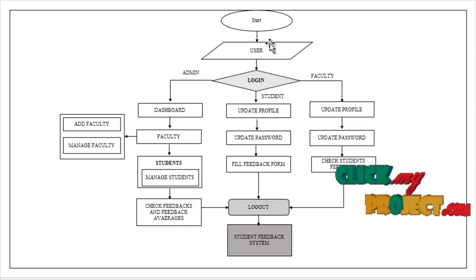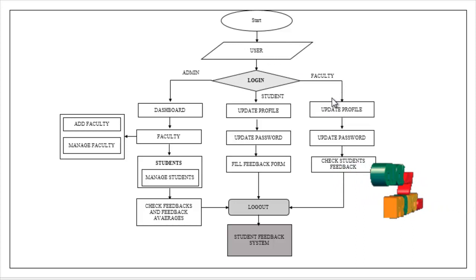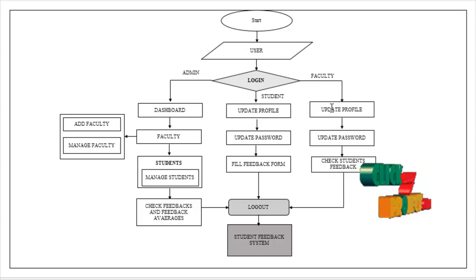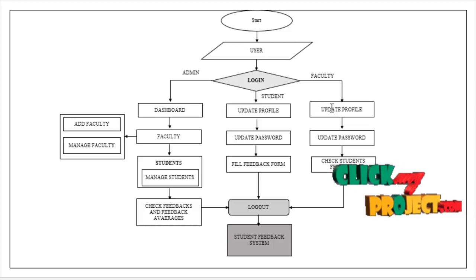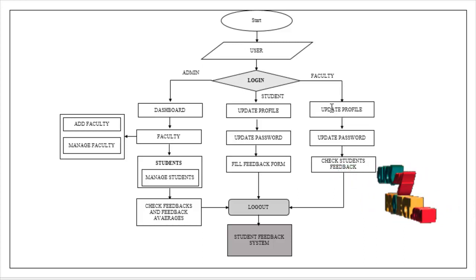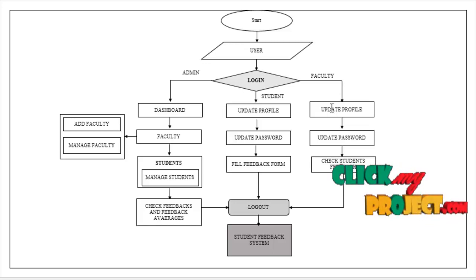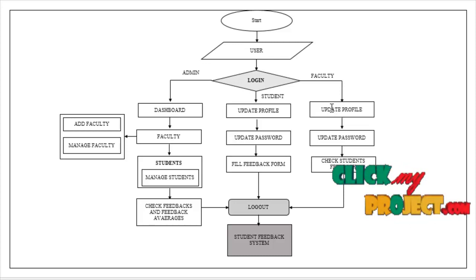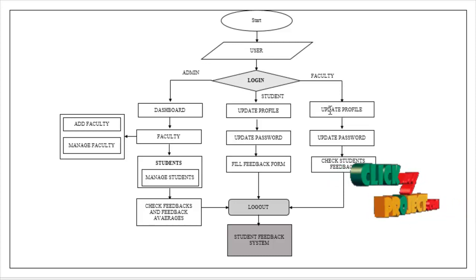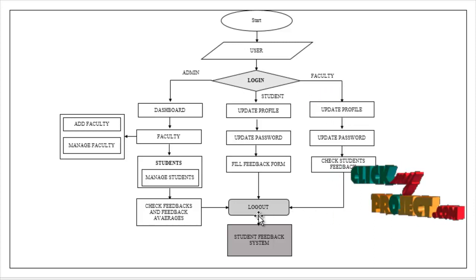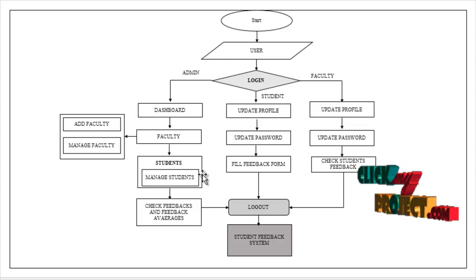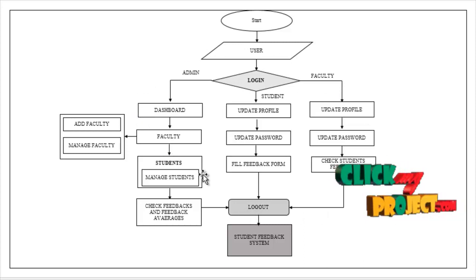Finally, if the user is faculty, the faculty has some features. First, the faculty can update their profile picture — either edit or delete it. Then the faculty can also change or update the password. Finally, the faculty can check the feedbacks filled by students. The faculty can also log out of the page using the log out button. These are the features present in the student feedback system. This is the flow of our process.